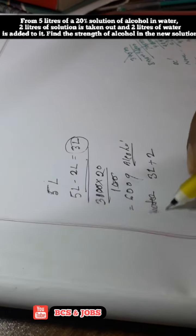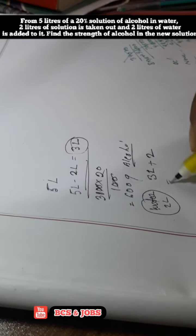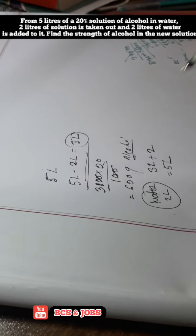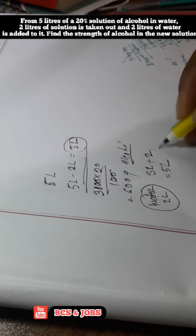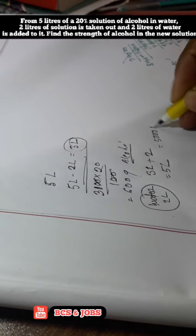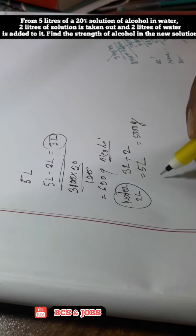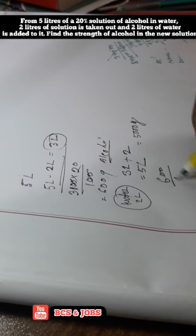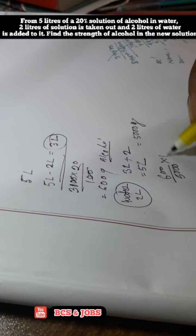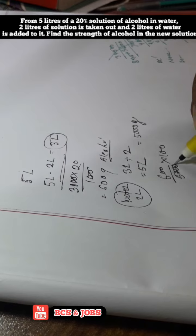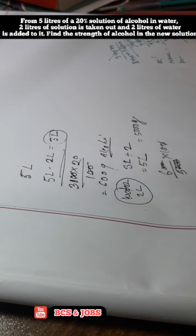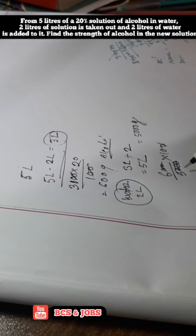This 5000 grams total mixture contains the alcohol. We have 600 grams of alcohol in 5000 grams total, which gives us 12% alcohol in the final mixture.